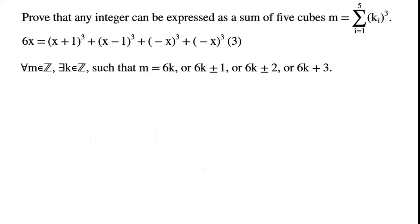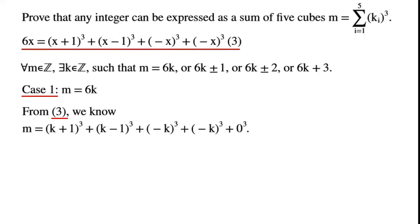For m in the set of integers, there exists k in the set of integers such that m equals 6k, or 6k plus or minus 1, or 6k plus or minus 2, or 6k plus 3. Case 1: m equals 6k.